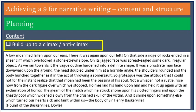'A low moan had fallen upon our ears. There it was again upon our left. On that side a ridge of rocks ended in a sheer cliff which overlooked a stone-strewn slope. On its jagged face was spread-eagled some dark, irregular object. As we ran towards it the vague outline hardened into a definite shape. It was a prostrate man, face downward upon the ground, the head doubled under him at a horrible angle, the shoulders rounded and the body hunched together as if in the act of throwing a somersault. So grotesque was the attitude that I could not for the instant realise that that moan had been the passing of his soul. Not a whisper, not a rustle rose now from the dark figure over which we stooped. Holmes laid his hand upon him and held it up again with an exclamation of horror. The gleam of the match which he struck shone upon his clotted fingers and upon the ghastly pallor which widened slowly from the crushed skull of the victim. And it shone upon something else which turned our hearts sick and faint within us — the body of Sir Henry Baskerville.'